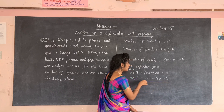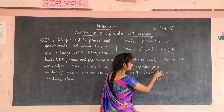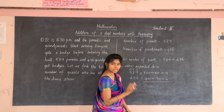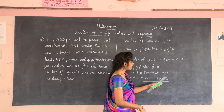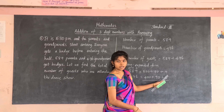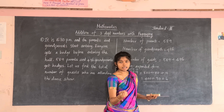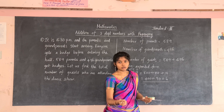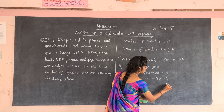First add the ones: keep nine in your mind and take six in the fingers. Say after nine — ten, eleven, twelve, thirteen, fourteen, fifteen. Write 15 as it is.